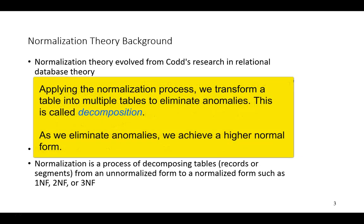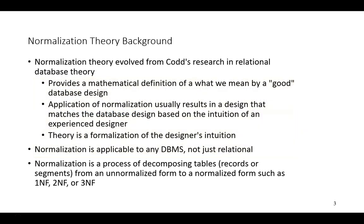Normalization as a process involves raising a table from a lower normal form to a higher normal form. It's a process of decomposition. We go from the extreme case of being un-normalized to first normal form, second normal form, and finally to third normal form. With each step, we reduce the possibility of errors or anomalies occurring during a database update process. The goal is to reduce the relations with anomalies to smaller, well-structured relations.